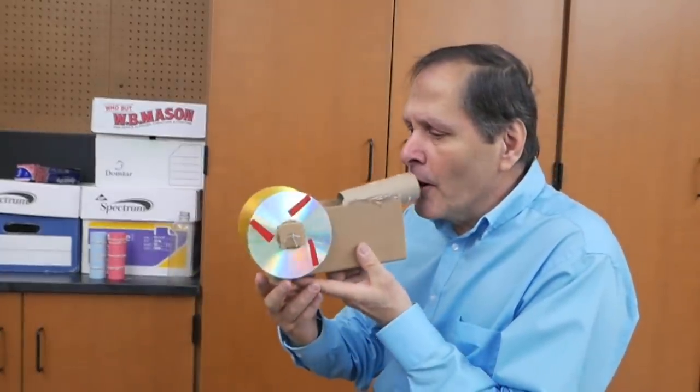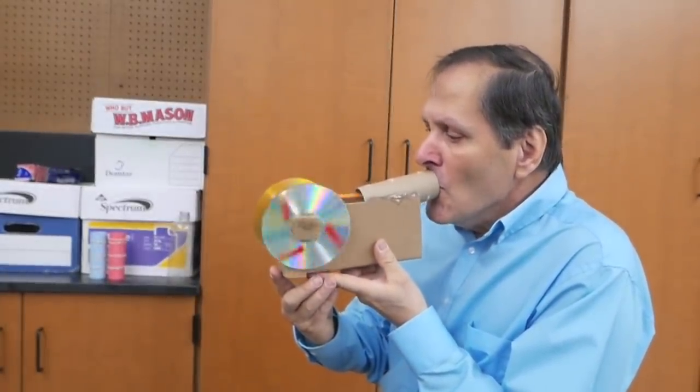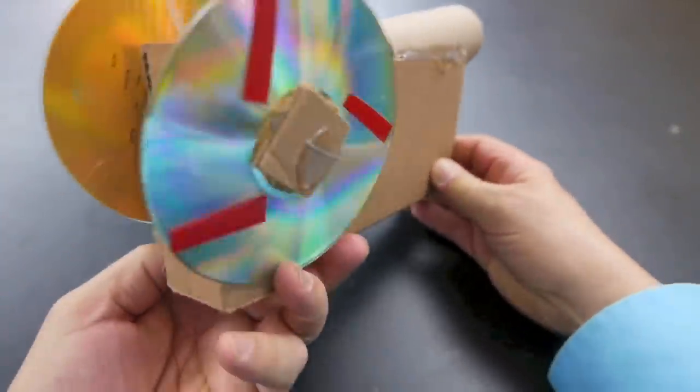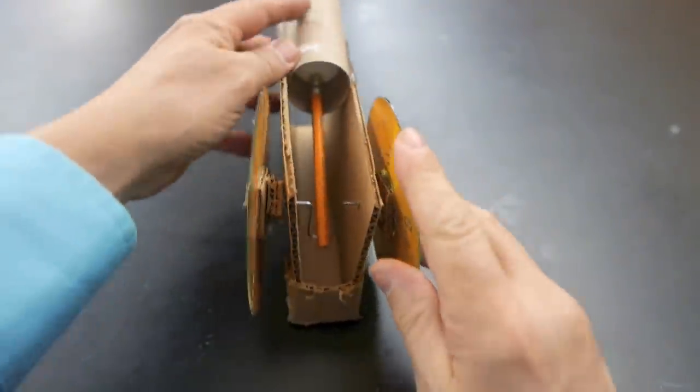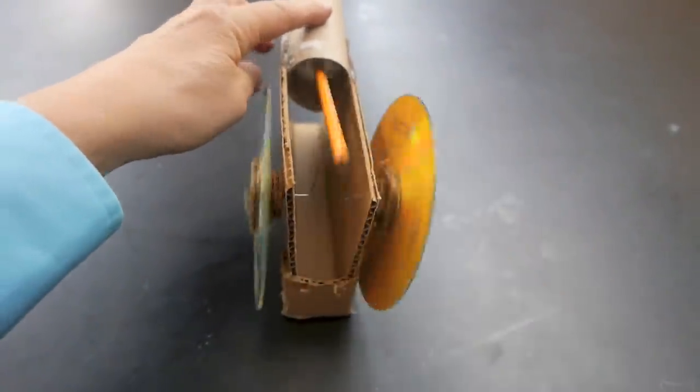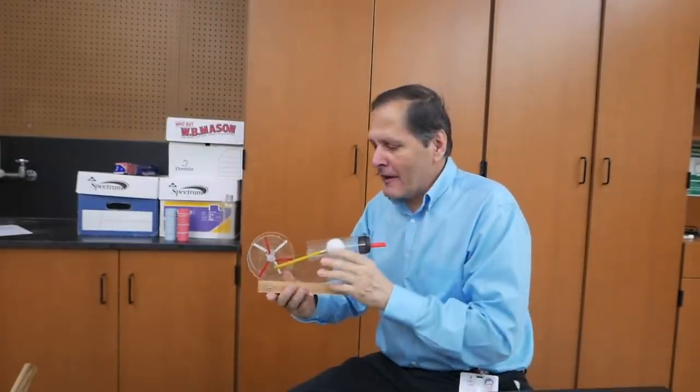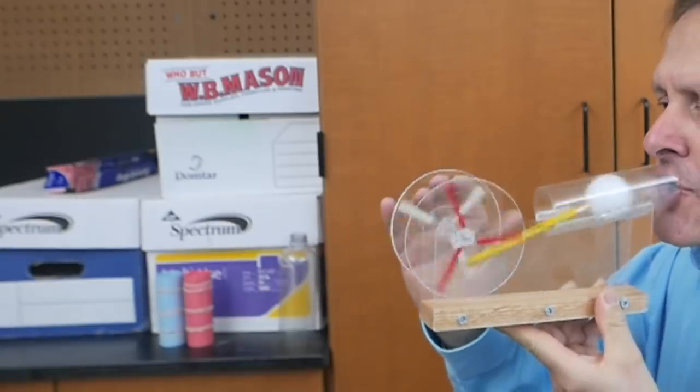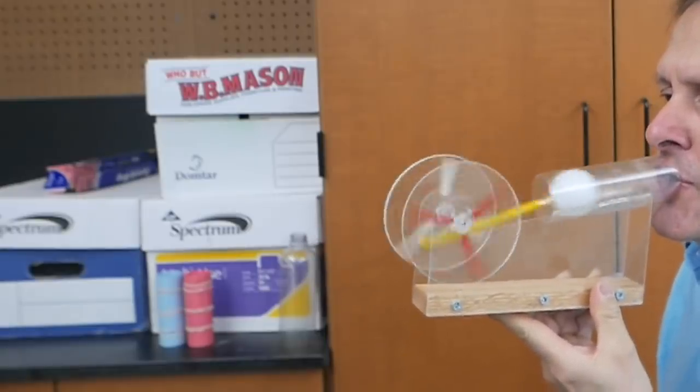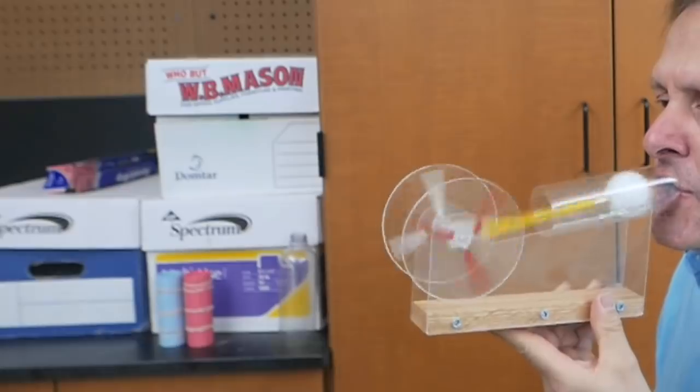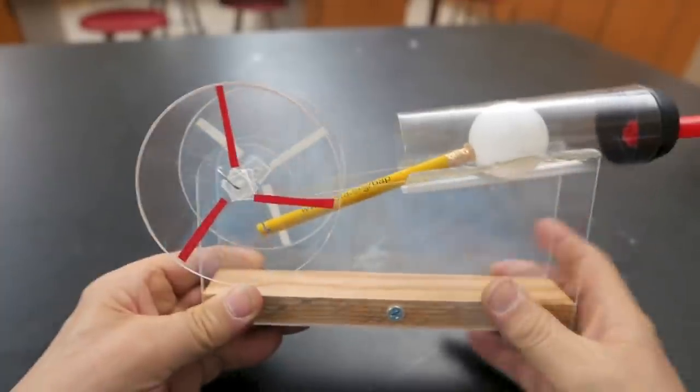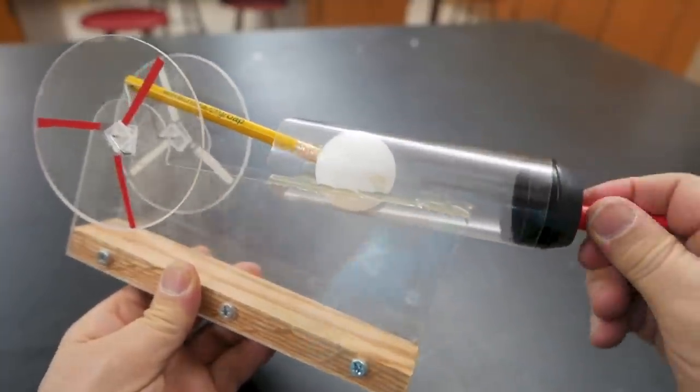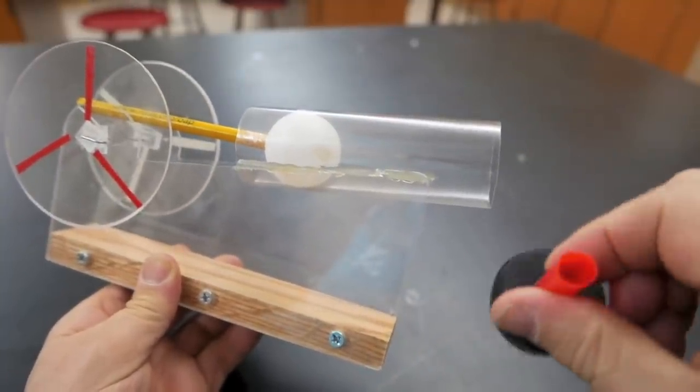Now this is our simplest one. This is made from mostly recycled materials and just requires a few hand tools to build it. Now I particularly like this one because it allows us to see what's going on. The cylinder for this one was made out of a fluorescent light tube plastic cover and it had a cap on the end which made a very nice mouthpiece.